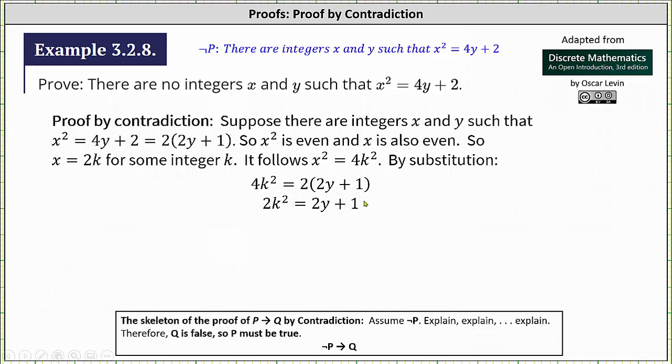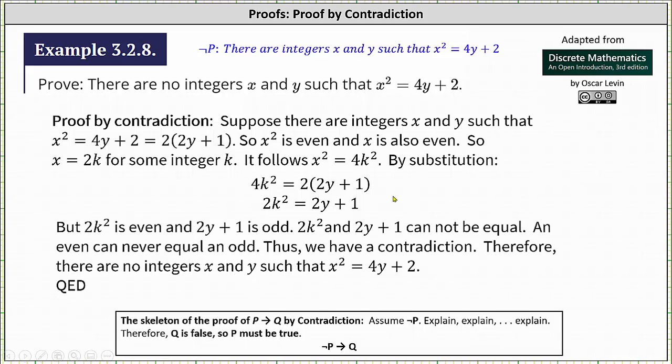From here we should notice something strange—here's the contradiction that we need. Notice the left side of the equation is an even number and the right side is an odd number. An even number can never equal an odd number. We have the contradiction we were looking for. Again, 2k squared is even and 2y plus 1 is odd. 2k squared and 2y plus 1 cannot be equal. An even number can never equal an odd. Thus, we have a contradiction.